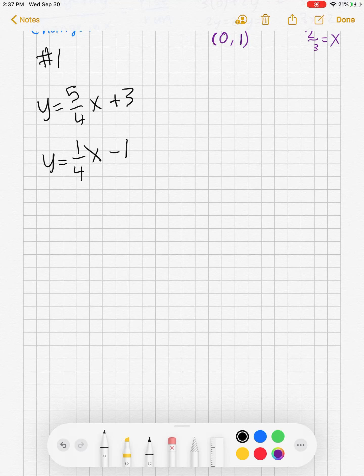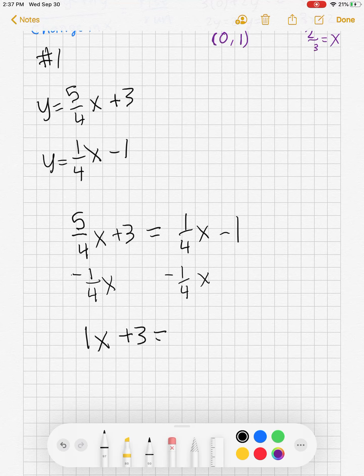This is number one on the homework. Let's go ahead and set them equal to each other. Let's go ahead and solve this. When we subtract one fourth x, subtract one fourth x, we end up with one x plus three equals negative one. X equals negative four.